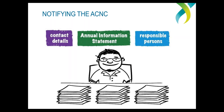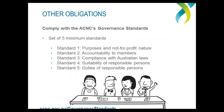To summarise what a PNC needs to keep at the forefront of its mind: the Annual Information Statement — the annual online form all charities must submit; contact details including the important address for service, which must be kept up to date; and the responsible persons list, which must be updated given the regular change in PNC committees. These three things are the key ongoing obligations.